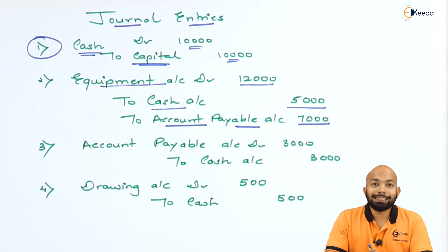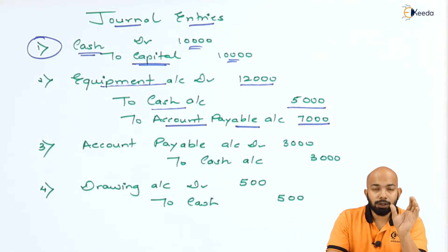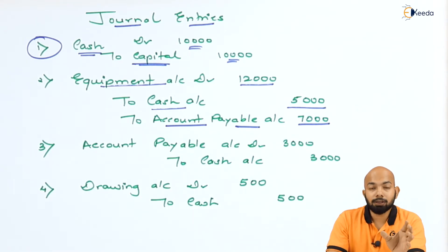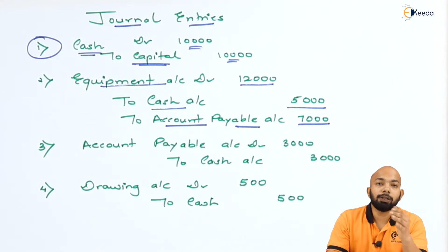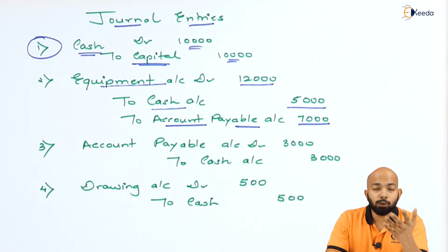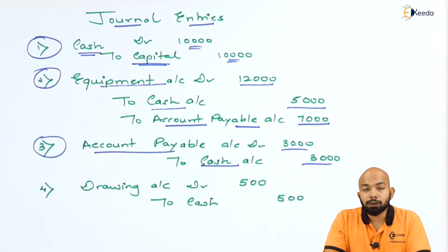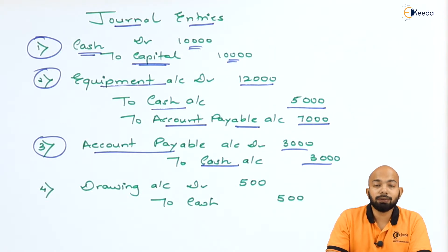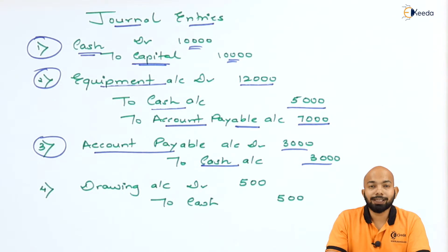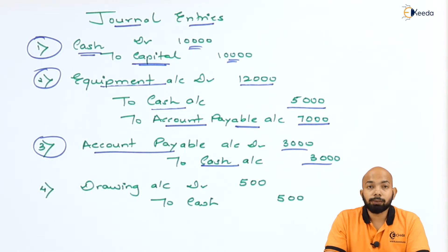For the third journal entry: we paid ₹3,000 in cash towards accounts payable. The liability had a credit balance of ₹7,000; paying ₹3,000 reduces it. So Accounts Payable Account is debited and Cash Account is credited for ₹3,000. Out of ₹7,000, ₹3,000 has been cleared, and ₹4,000 remains as the balance to be shown in the trial balance under accounts payable.